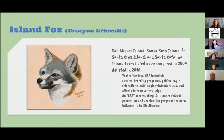The island fox has several species named after specific islands on the Pacific coast. They were listed as endangered in the ESA in 2004 and delisted in 2016. Protections from the ESA included captive breeding programs, golden eagle relocations, bald eagle reintroductions, and efforts to remove feral pigs. This is widely known as an ESA success story, and they are still under federal protection with a vaccination program initiated to battle diseases.